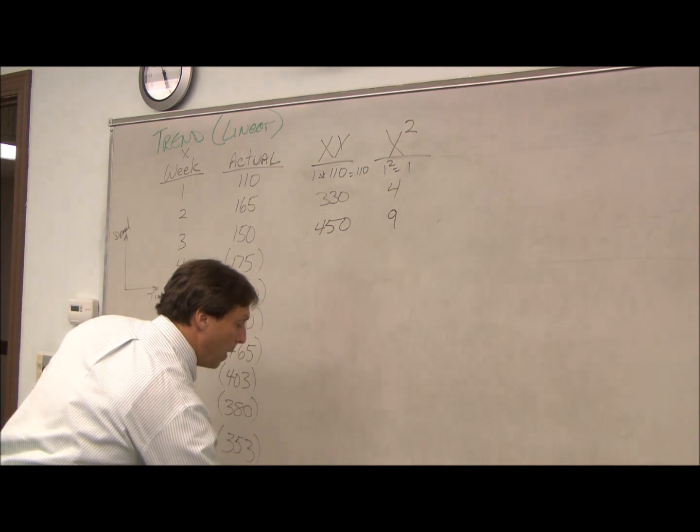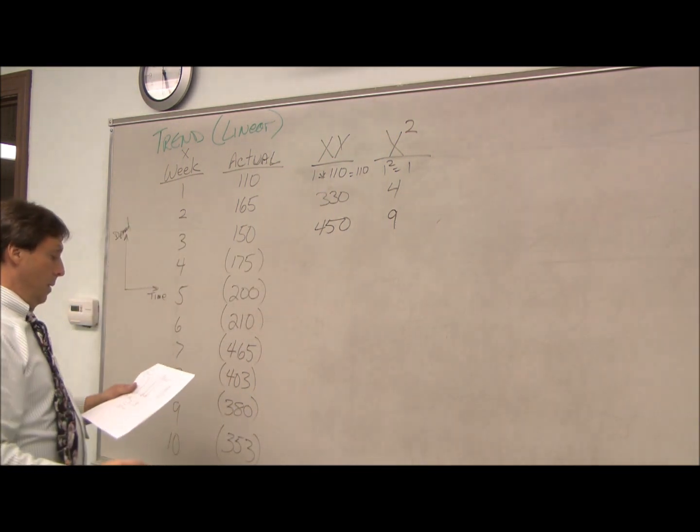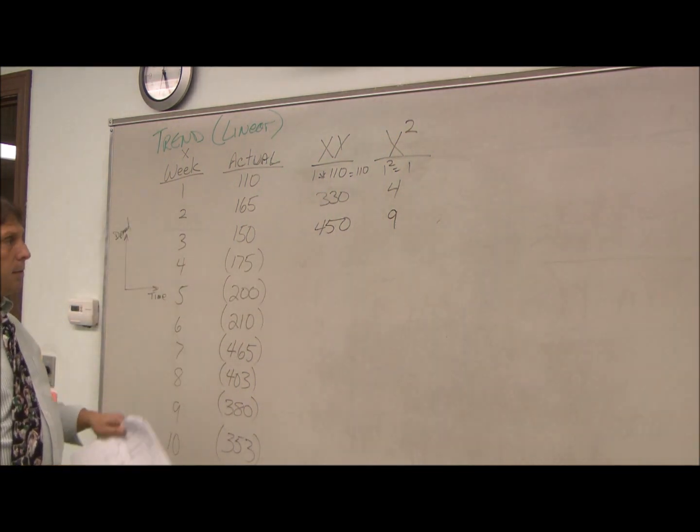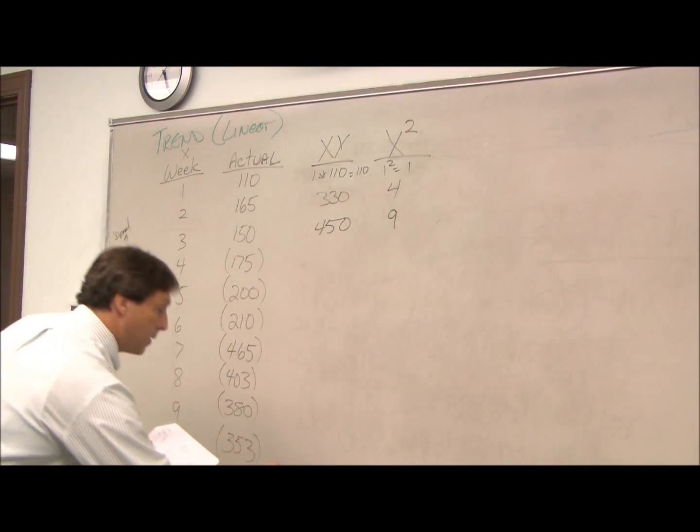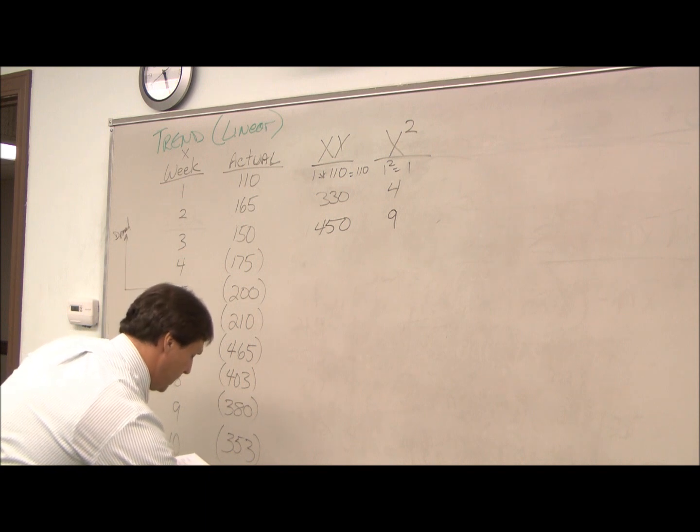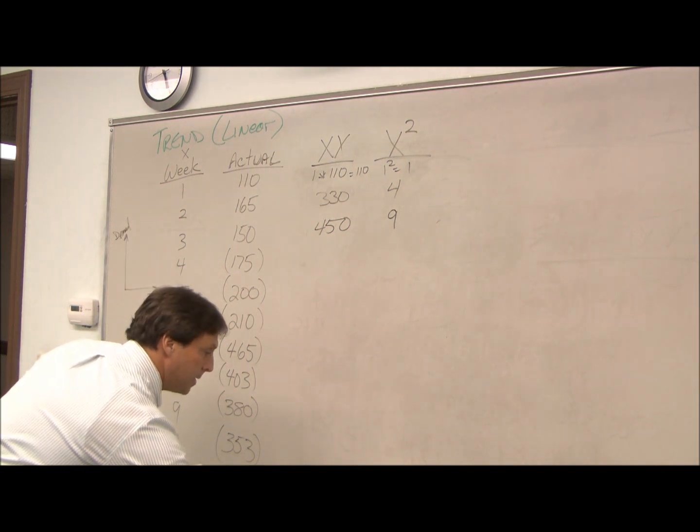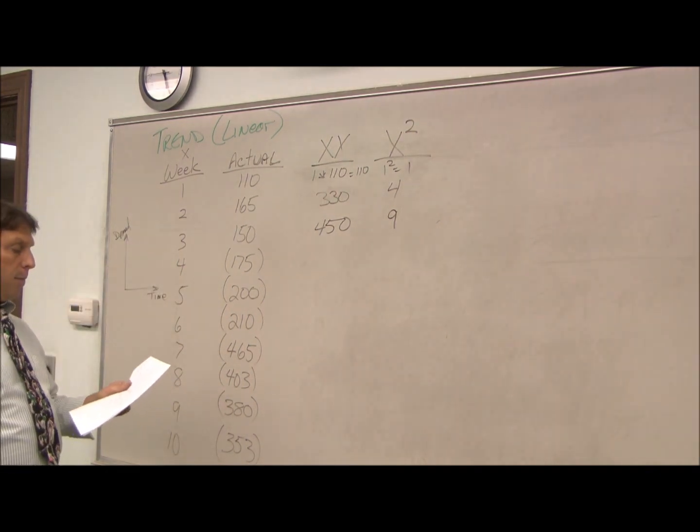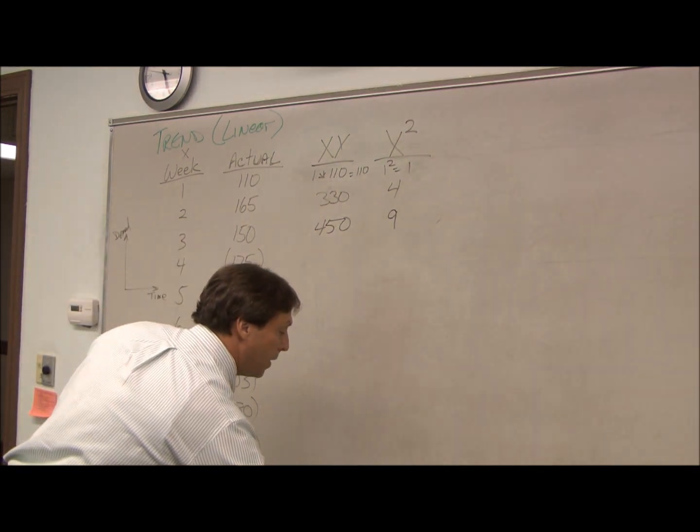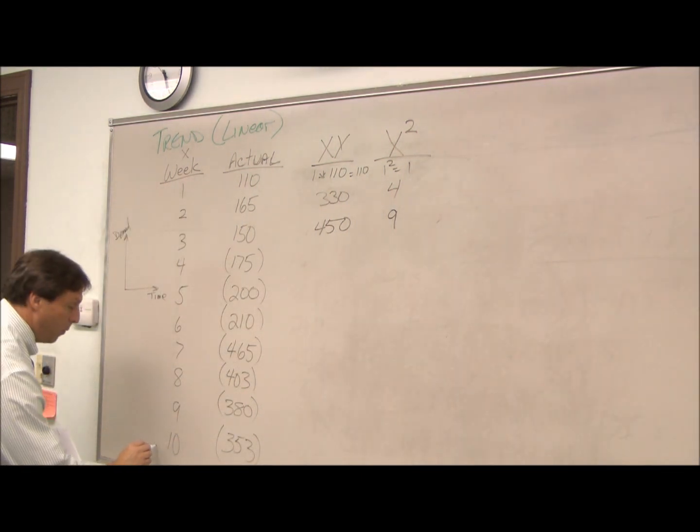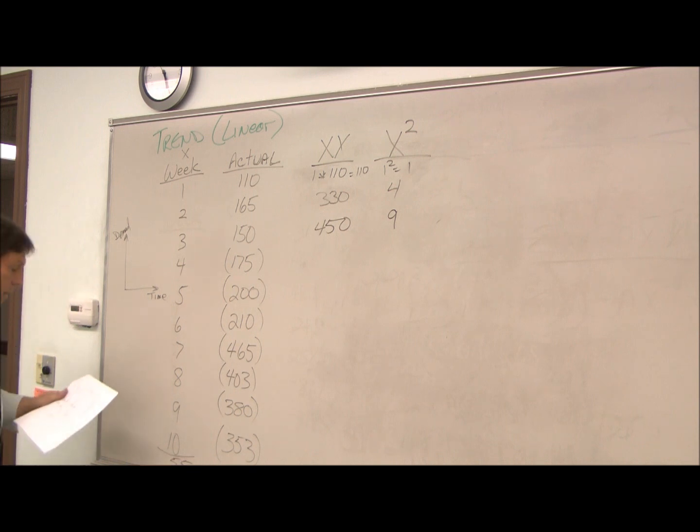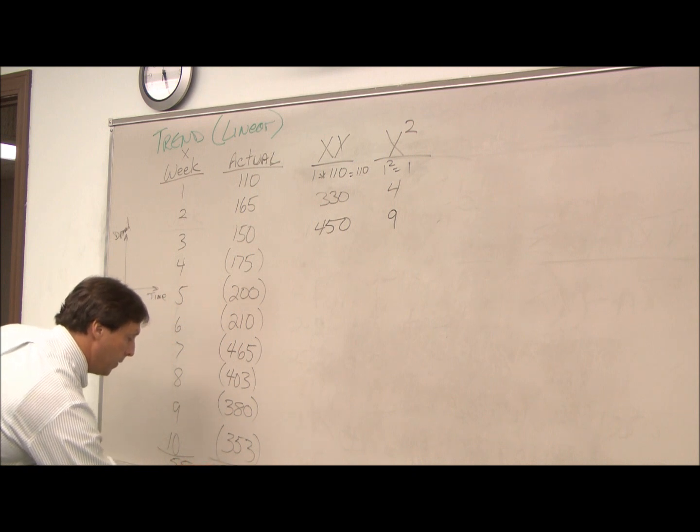When we get to the bottom, we do the summations. So the summations of my complete list here of my x,y is 17,279. The summations of my x-squared is 385. The summations of my weeks is 55. And the summations of my y's will be 2,611.